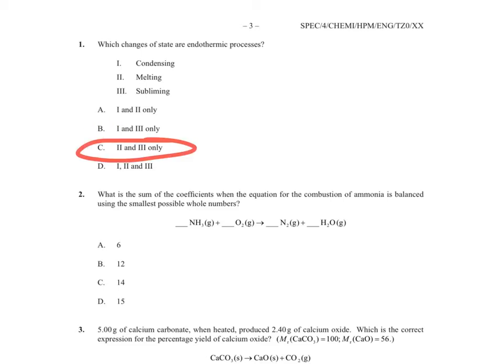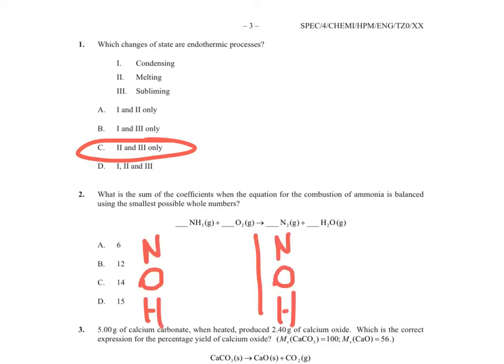To answer question 2 we have to balance this equation using the smallest possible whole numbers. One method is to draw a line where the arrow is and write the elements on the left and right-hand side, then count them up. On the left-hand side we have one nitrogen, two oxygens and three hydrogens, and on the right-hand side two hydrogens, one oxygen and two hydrogens.